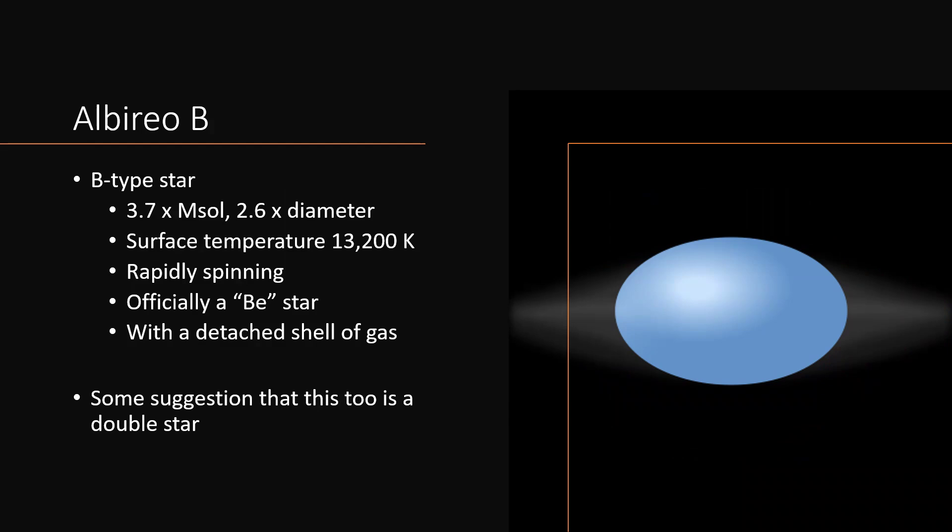So rapidly, in fact, that we classify this as a BE type star. And that tends to go with the fact that it has a detached shell of gas, possibly because that incredible speed of rotation is throwing material off the equator as shown in the illustration there. And there's some evidence that this as well is a double star, but that's not been proven yet either. So that would be Albireo BB if it was proven.